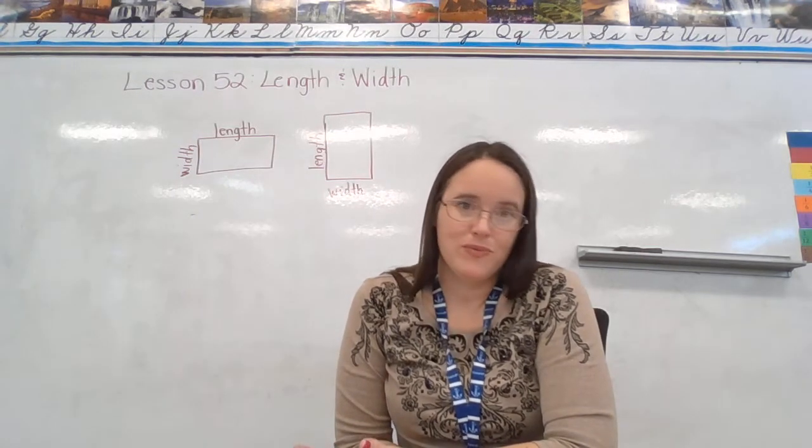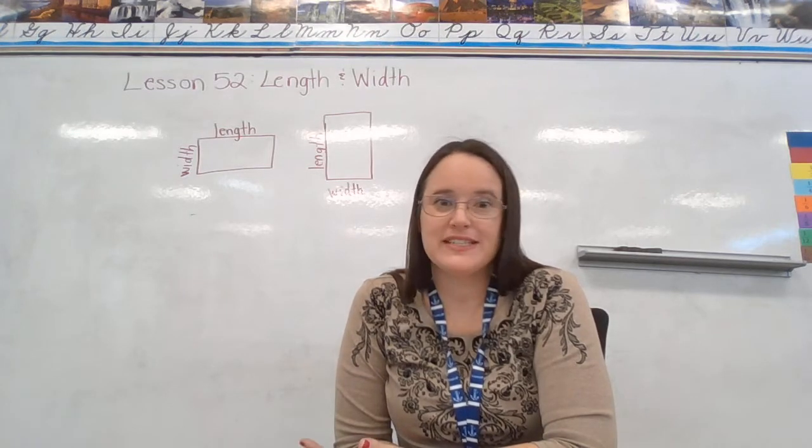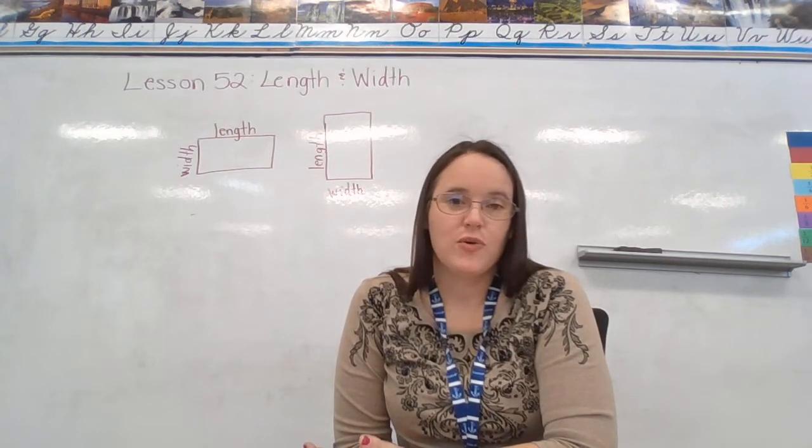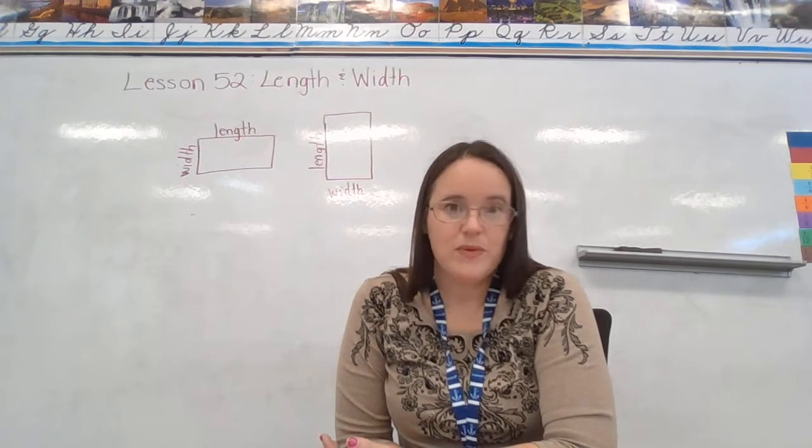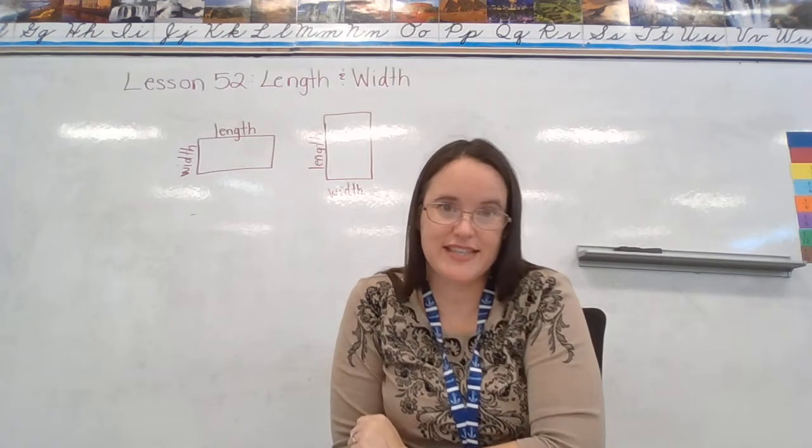So, we don't know the difference between length and width. They're the same length. There isn't a longer one. So, when we're talking about a square, we actually just call it side length. There is no width, because all four sides are the same.